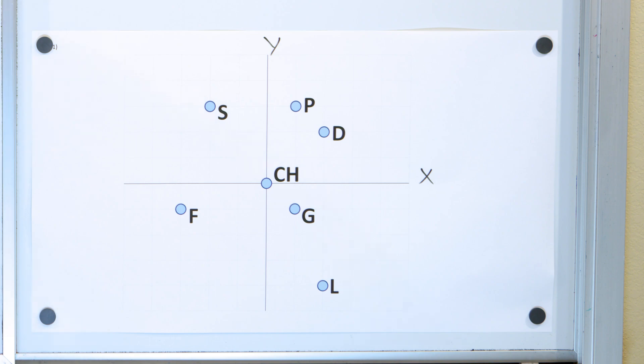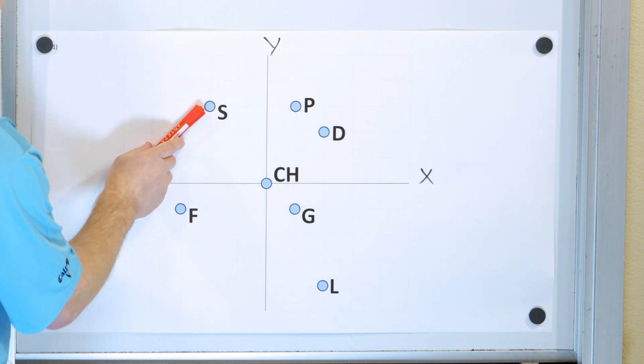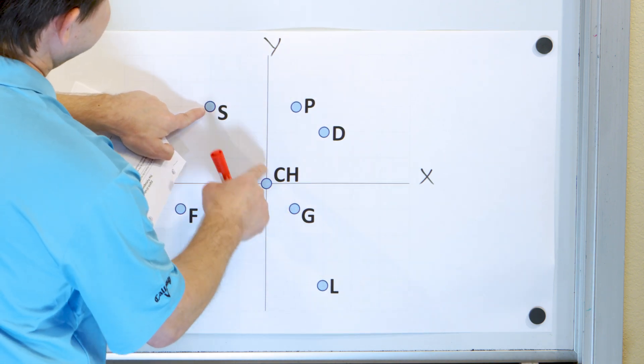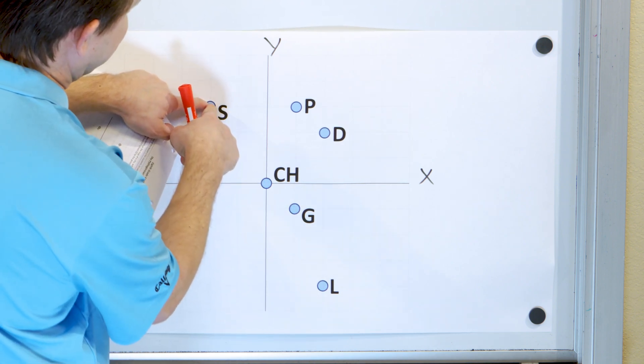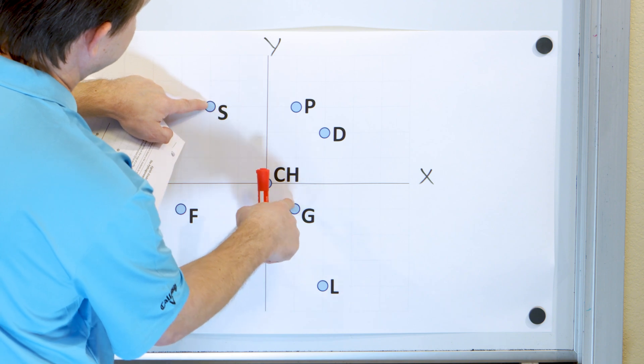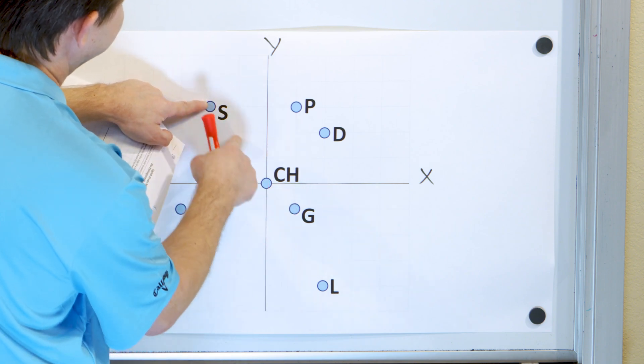So we're trying to find the distance from the school, which is here, to the grocery store. Now this is a slanted distance. It's not going up and down the block. This would be like a bird flying directly from the school to the grocery store. How far is that distance?